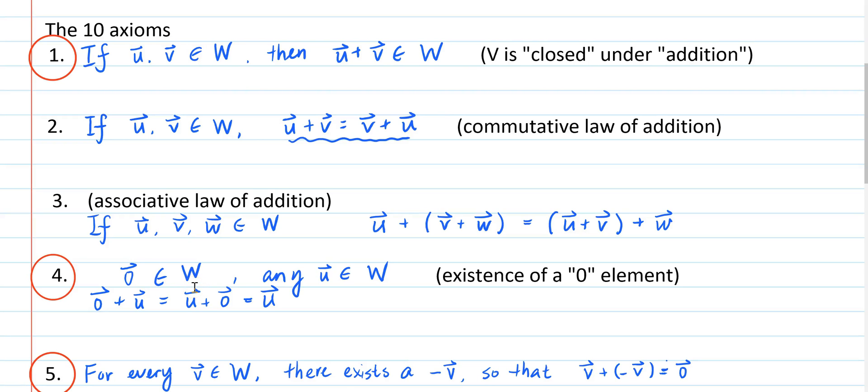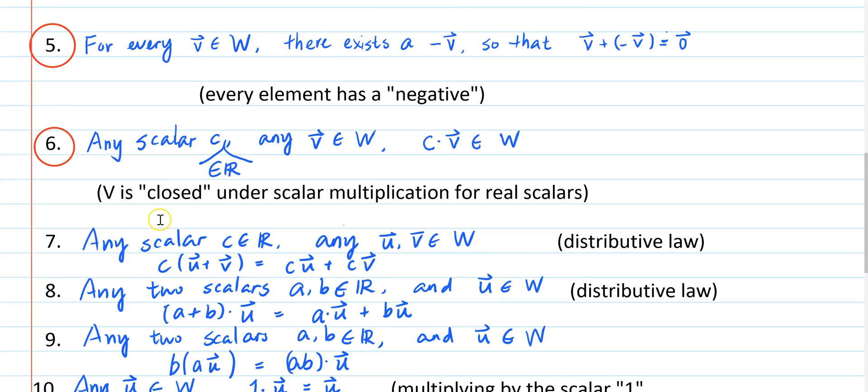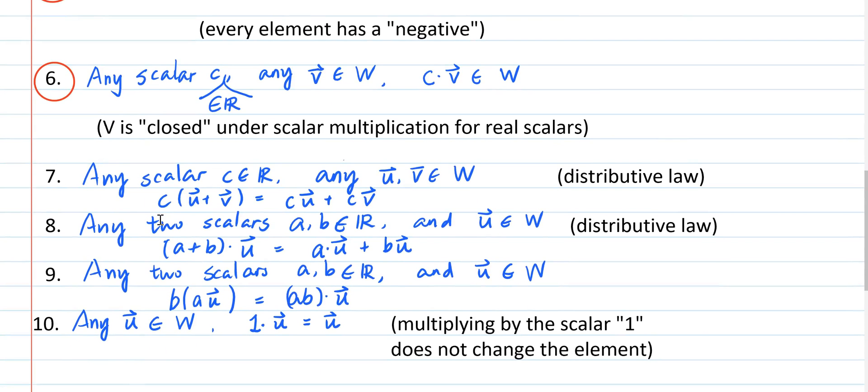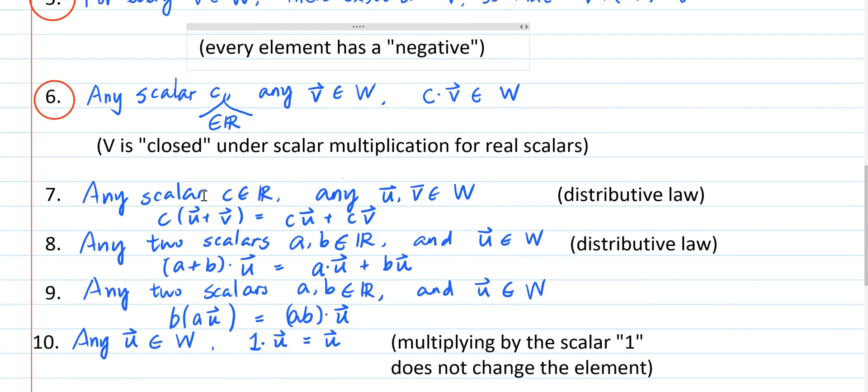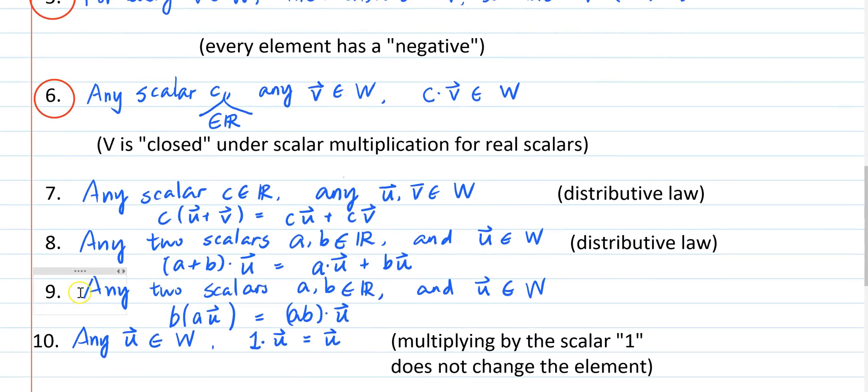It's the same logic we're using here to argue that these axioms 2, 3, 7, 8, 9, 10 are inherited by any subset of V. That is, if these axioms are true for V, then they are true for any subset of V.